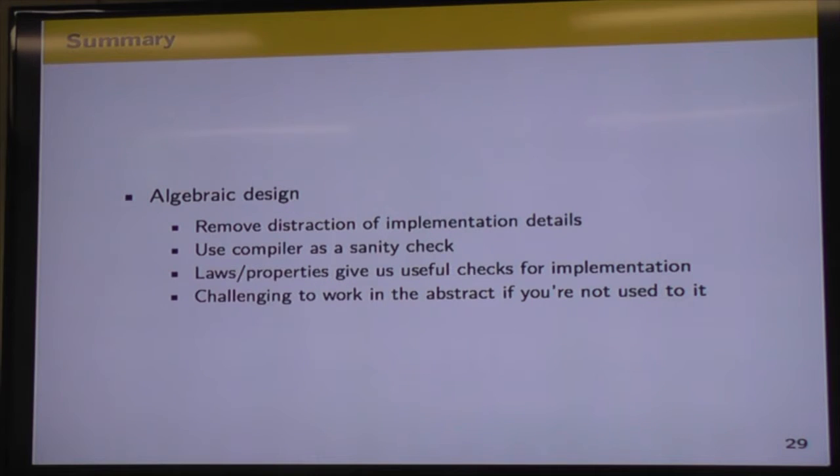So in summary, we've looked at algebraic design and looked at some benefits of it. We've removed the distraction of our implementation details. And that's something that I've definitely struggled with before on my own projects. Getting fixated on implementation and losing sight of what exactly my library or code should be doing. We've seen that we can use our compiler as a sanity check. So without having our implementations, we can still make use of our tools. And make sure that our types check and that our primitives all fit together nicely. We've looked at using laws and properties and property-based tests as useful checks for our implementation. And as I said before, I've definitely found it challenging, including in this chapter, working purely in abstract. It's not something that I'm especially good at, but I definitely can see and have felt the benefit as well working through the chapter. So once again, I recommend that you have a crack.